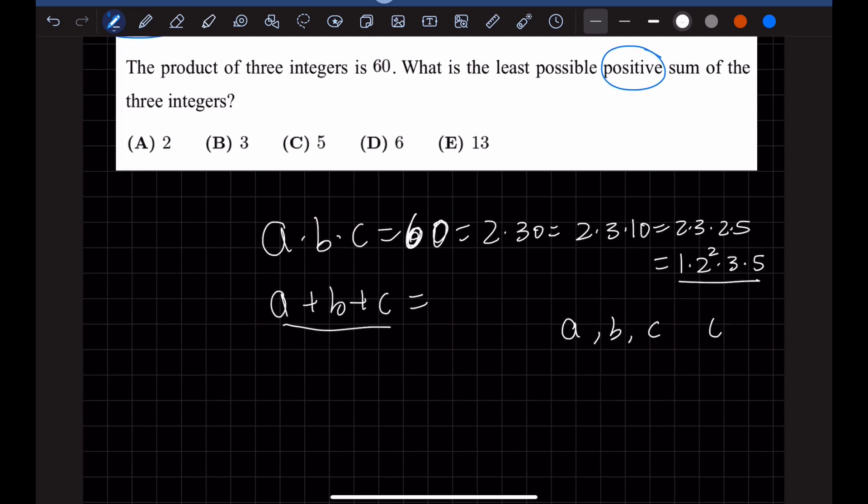Because if we have A, B, and C all being positive, then it's going to be quite big. So we should have two numbers negative and one number positive. Okay, so that's a really good observation.